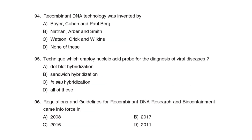94th Question: Recombinant DNA technology was invented by Correct Answer: Option A: Boyer, Cohen, and Berg. 95th Question: The technique which employs a nucleic acid probe for the diagnosis of viral disease is Correct Answer: Option D: All of these.